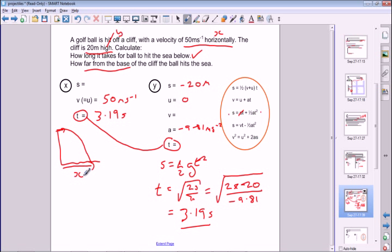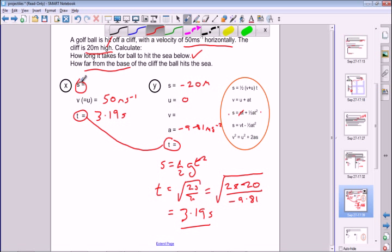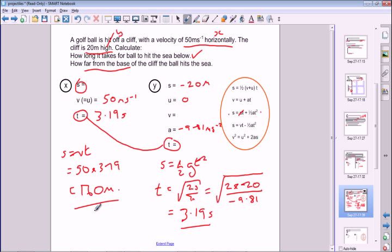We're looking for the x component of the displacement. This one's easy because we've only got three quantities, and it's just displacement, velocity, and time. So we can just use the equation s is equal to vt, which is equal to 50 times 3.19. And when you do that, you get a displacement of 160 meters. So the golf ball will hit the sea 160 meters away from the base of the cliff.